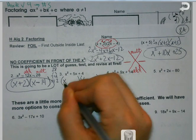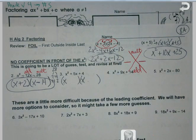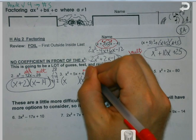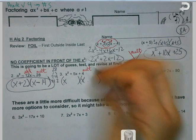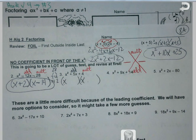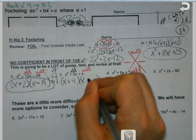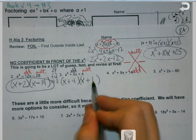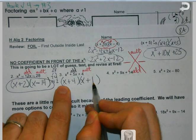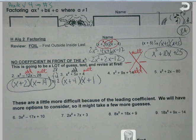I'm just going to play a little. So whatever variable I have goes first. I want to multiply to get the number on the end. Not a lot of choices this time. Add to get the number in the middle. Multiply to 4 and add to 5. 4 and 1. 4 times 1 is 4. 4x plus 1x is 5x. Good to go.